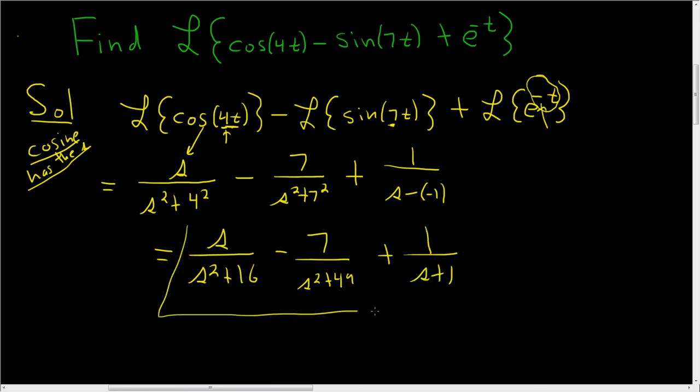Let's go over it one more time just in case it was hazy. That was a lot of formulas without writing them down. So cosine has the s. And on the bottom, you always have s squared plus, in this case, 4 squared.